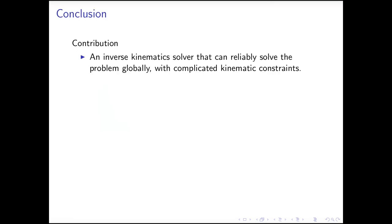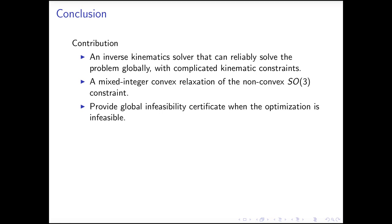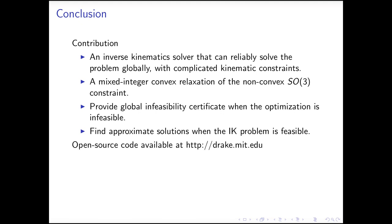To conclude, we present an inverse kinematics solver that can reliably solve the problem globally, with complicated kinematic constraints. The key enabler is a mixed integer convex relaxation of the non-convex SO(3) rotation constraints. With this approach, we can either provide global infeasibility certificates, when the optimization is infeasible, or find approximate solutions, when the IK problem is feasible. The code is open-sourced in Drake. In our future work, we want to add dynamic constraints into the problem, to solve a trajectory optimization problem through contact, or a grasp planning problem.